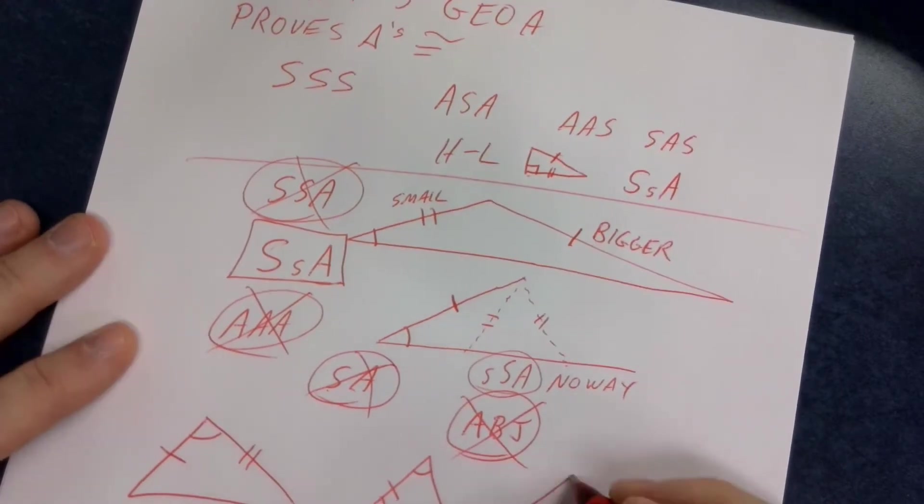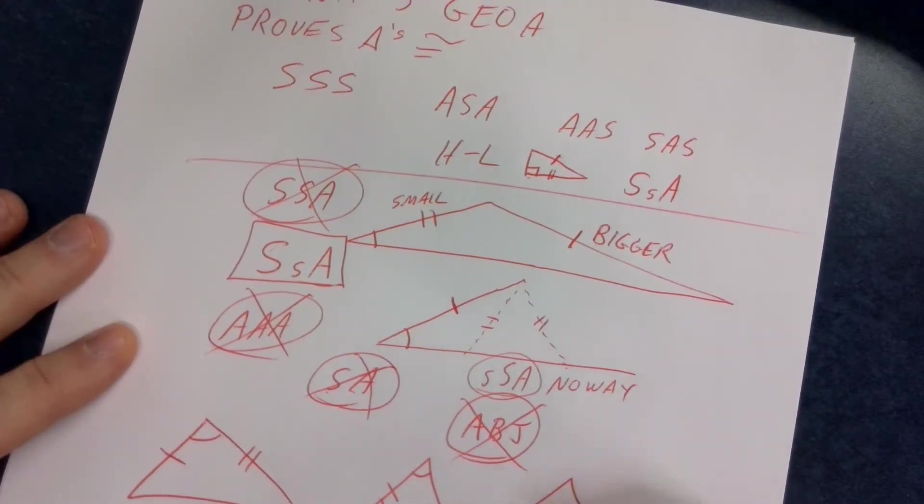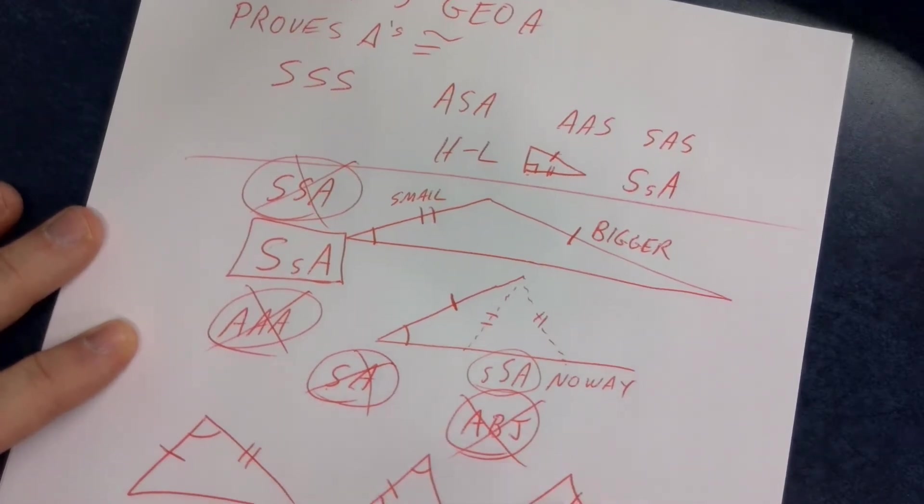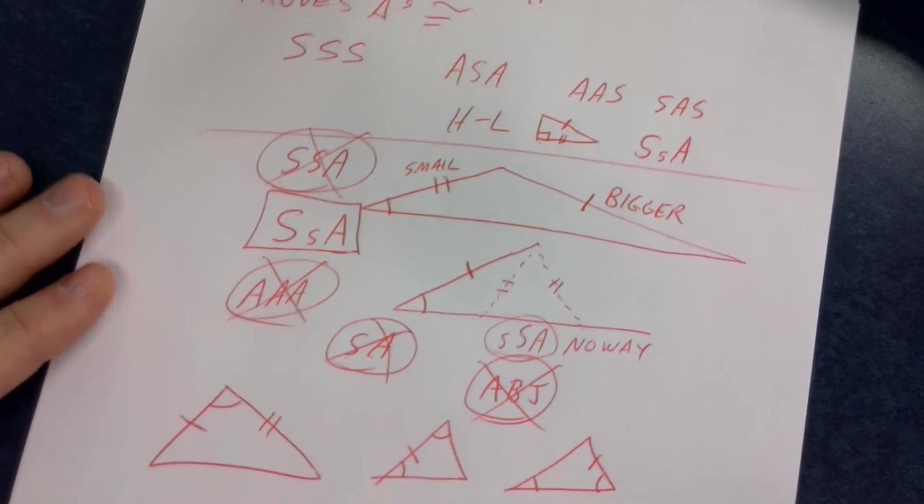And if I give you a triangle like this, you got to know that that is angle angle side markings. So the order in which it goes around.